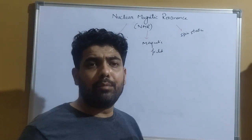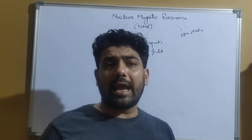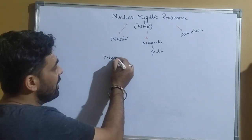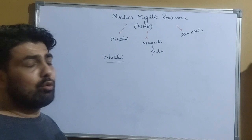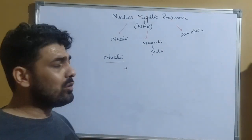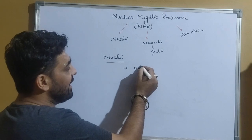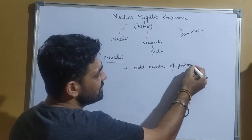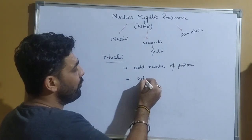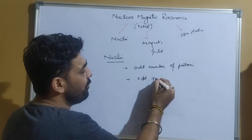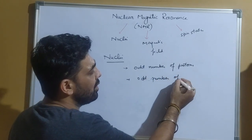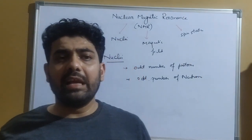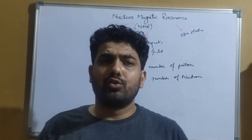This technique is applicable to certain nuclei. For NMR, it is applicable to those nuclei which show either of two properties: they must have an odd number of protons or an odd number of neutrons.